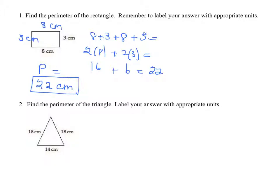Find the perimeter of the triangle. We're just going to add up all the sides. 18, 18, and 14. So 8 and 8 is 16 and 4 is 20. 1, 2, 3, 4, 5, 50 centimeters. Good. Next.